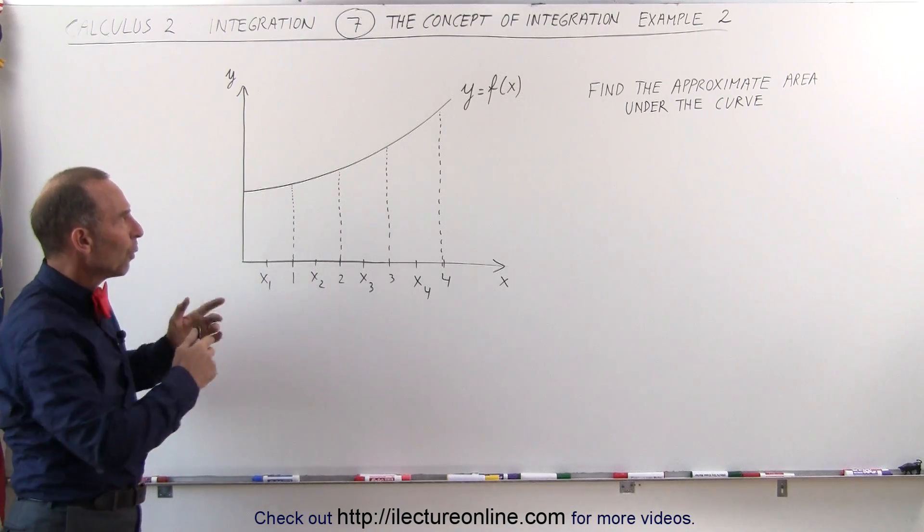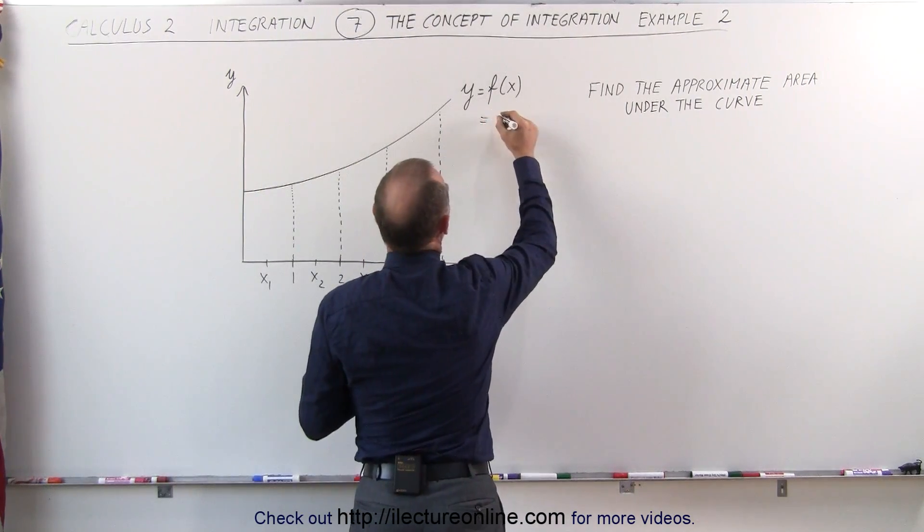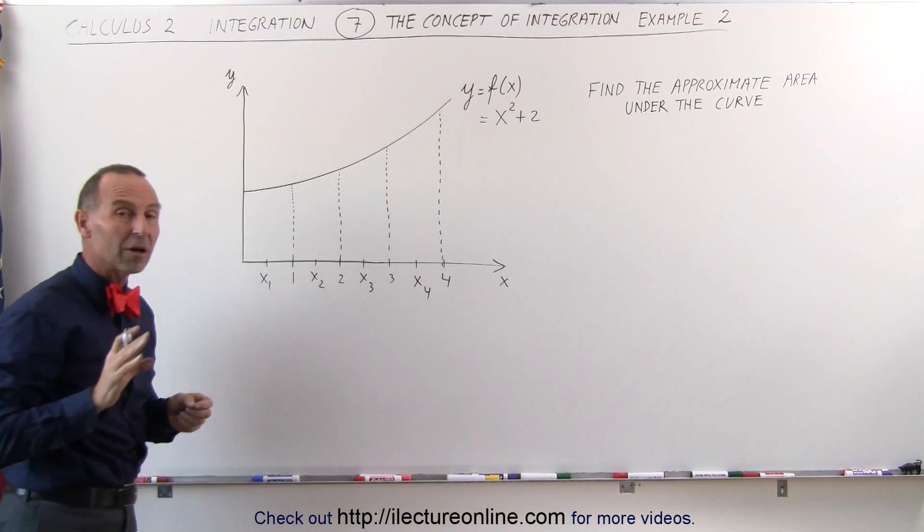Here we have a curve, y is equal to f of x, and let's say that that curve is equal to x squared plus 2. It's the same curve that we had on the previous example, but we're going to solve this differently.